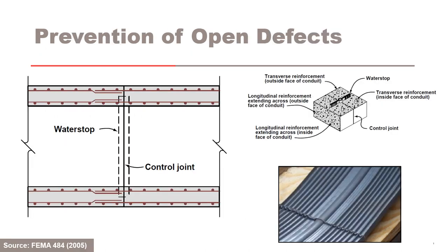To prevent joints from opening, a controlled joint is used in reinforced concrete conduit construction. Longitudinal reinforcement is continuous through the joint. The top right figure shows a water stop that is placed across the joints of the conduit to stop water from coming through the joint. The bottom right figure shows a photo of a typical water stop used in conduit construction to prevent movement of water through the joints.